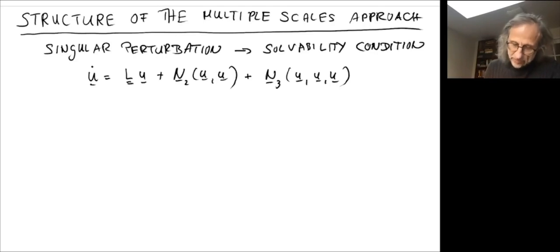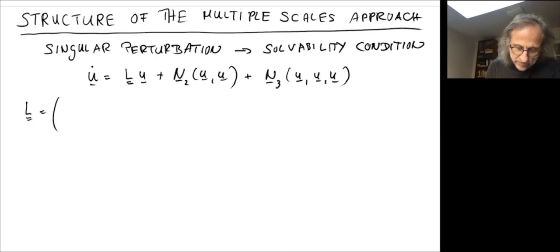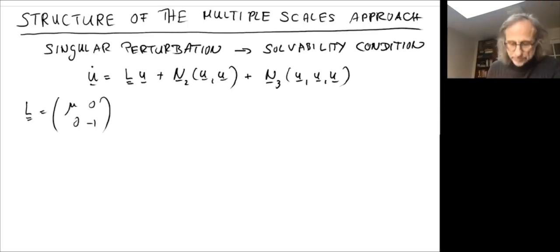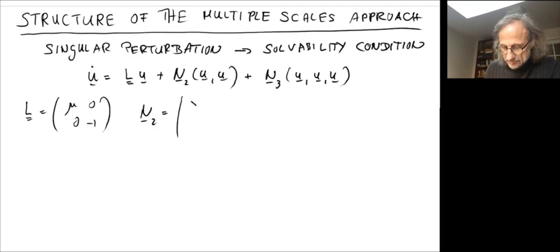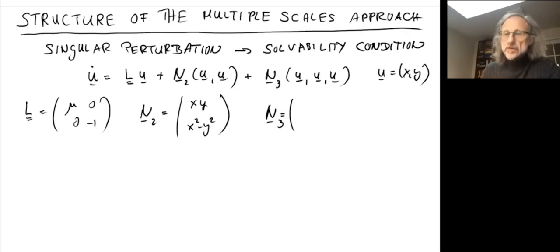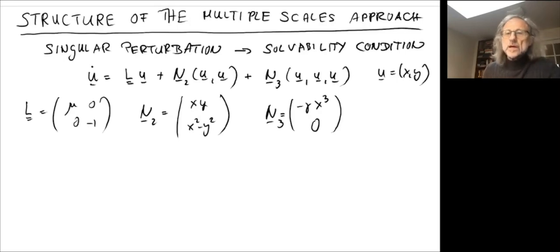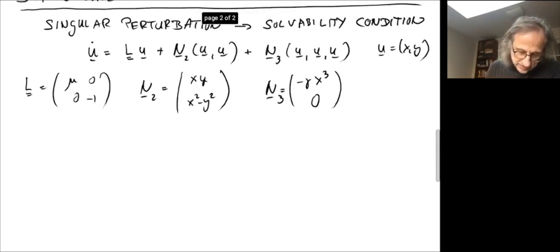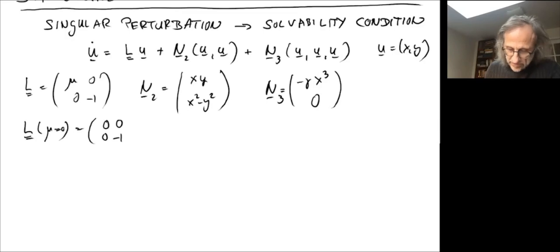Let me write down what L and N actually are in our case. L is given by mu, zero, zero, minus one. N2 had two components: xy and x squared minus y squared, where u equals (x, y). N3 has only one component: minus gamma x cubed and zero. The key element is that L, when mu equals zero, is given by zero, zero, zero, minus one, and therefore is singular.